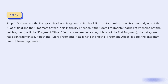Step 4: Determine if the datagram has been fragmented. To check if the datagram has been fragmented, look at the flags field and the fragment offset field in the IPv4 header. If the more fragments flag is set (meaning this is not the last fragment), or if the fragment offset field is non-zero (indicating this is not the first fragment), the datagram has been fragmented.